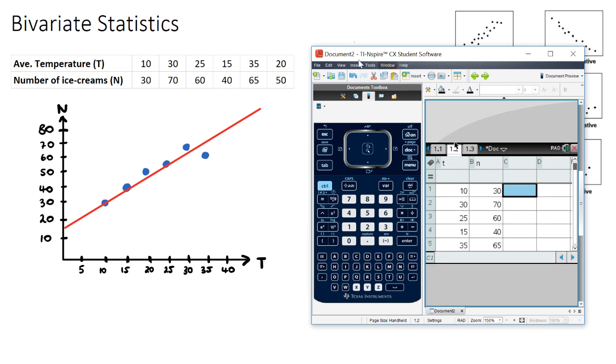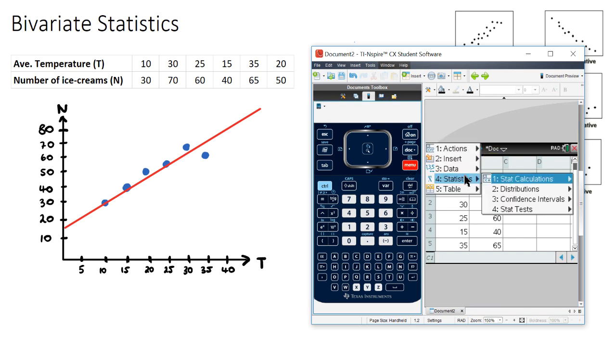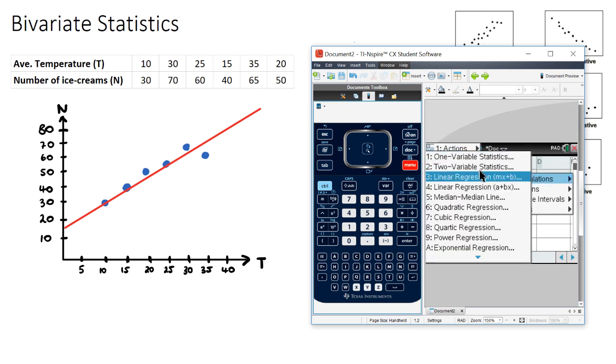And then if you have this calculator, the TI-Nspire, you can go to menu, statistics, stat calculations, and we're looking for linear regression. So we can choose either mx plus b or a plus bx. I like to use this one here, mx plus b, because this is the equation of a straight line that we're used to seeing, mx plus c, y equals mx plus c.